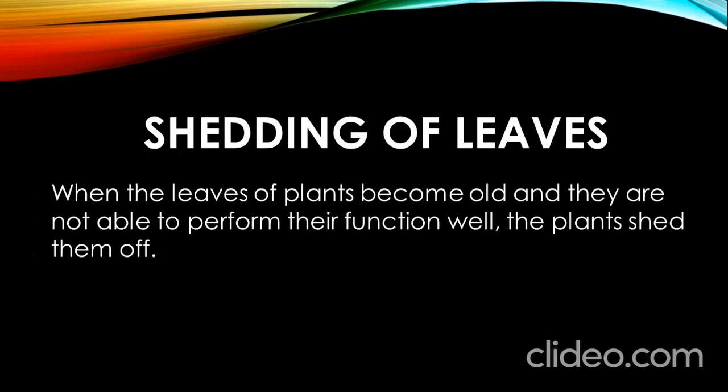Shedding of leaves. When the leaves of plants become old and they are not able to perform their function well, the plants shed them off. The function of leaves is to make food for the plant. When they are not able to make food for the plant, the plant sheds them.